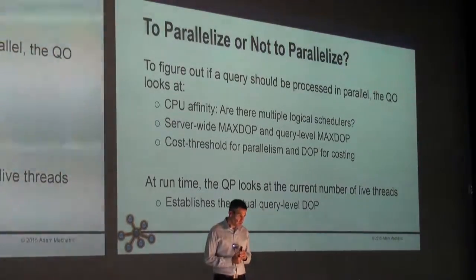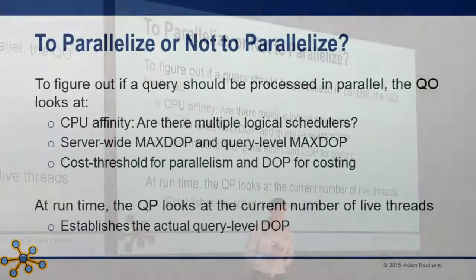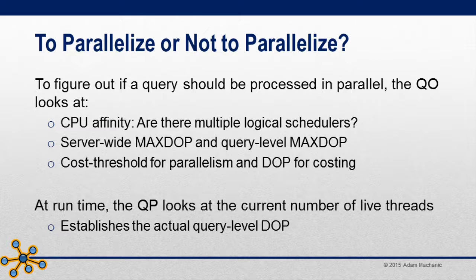Once the CPU cost has been divided by the optimizer, a few other things are looked at. Your CPU affinity setting influences parallelism — if you have an affinity mask set, you can either limit the number of schedulers or you might only have one scheduler. The optimizer also considers DOP settings at the server and query level. And then there's another setting called cost threshold for parallelism. The cost threshold for parallelism says that the serial version of the plan has to exceed that cost value for the query optimizer to even consider trying the parallel plan computation.